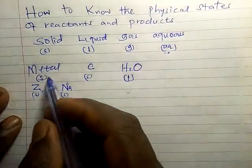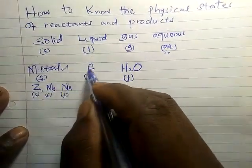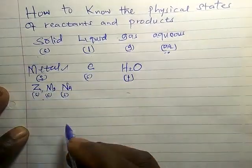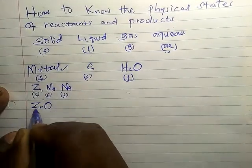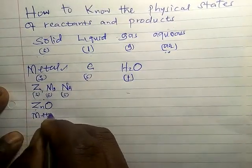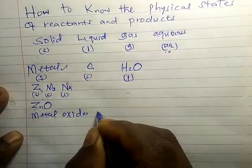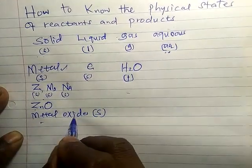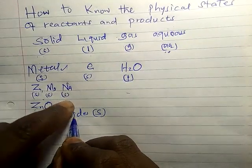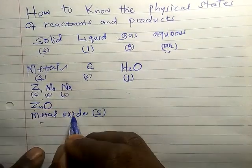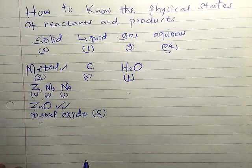Before I move from solids — I've talked about metals and solids like carbon. What about zinc oxide? Metal oxides — all of them are solids. If you're talking about zinc oxide, magnesium oxide, aluminium oxide — all of them should be in solid form.